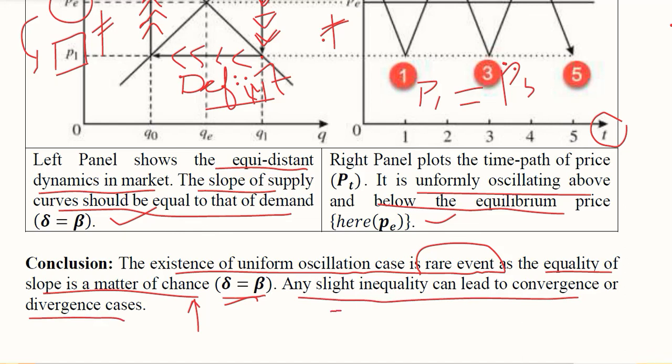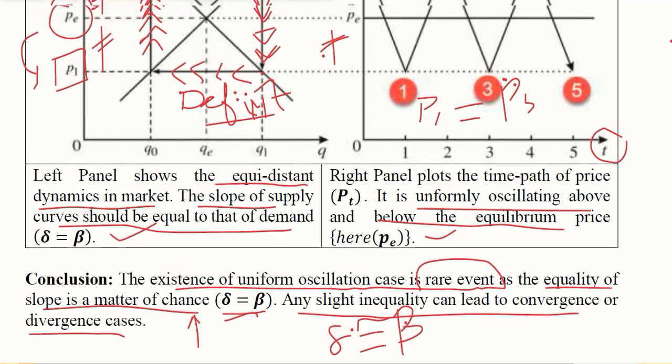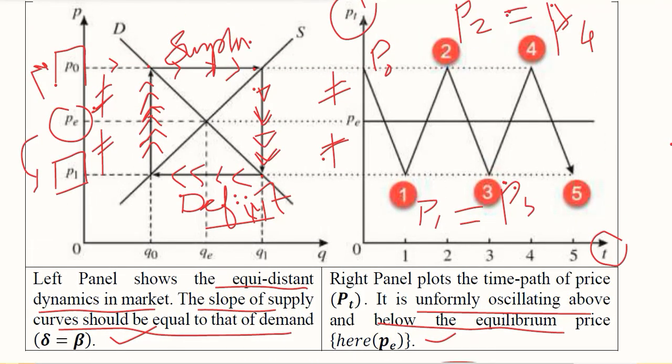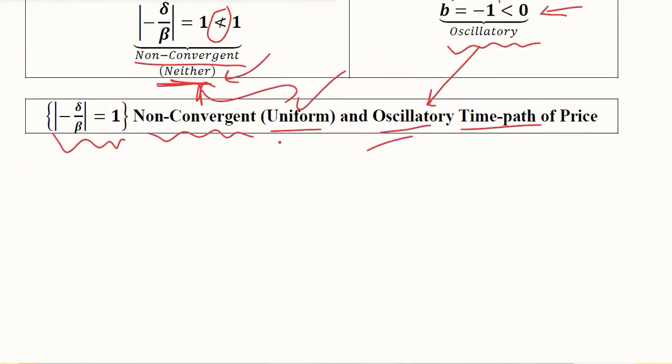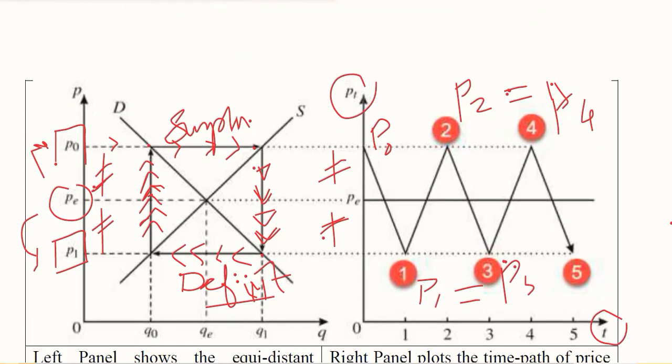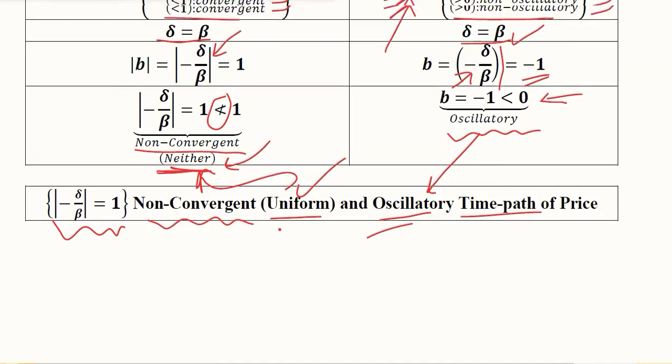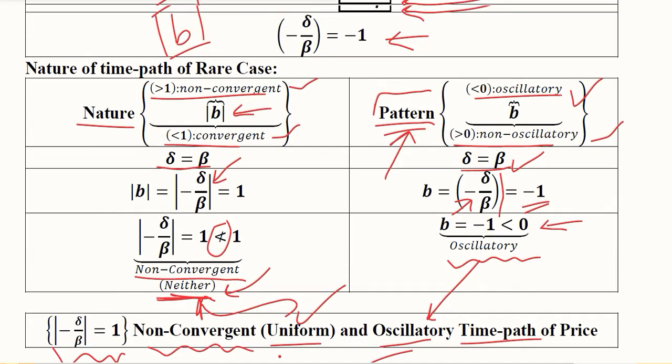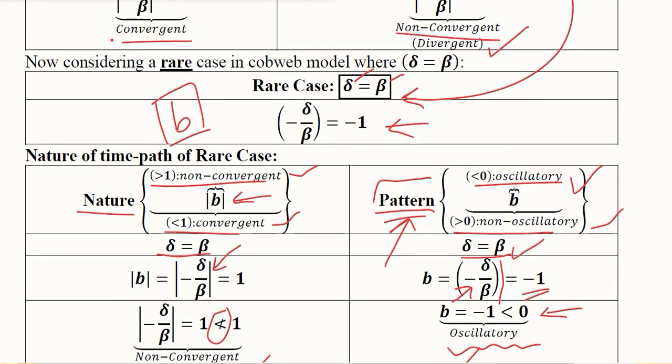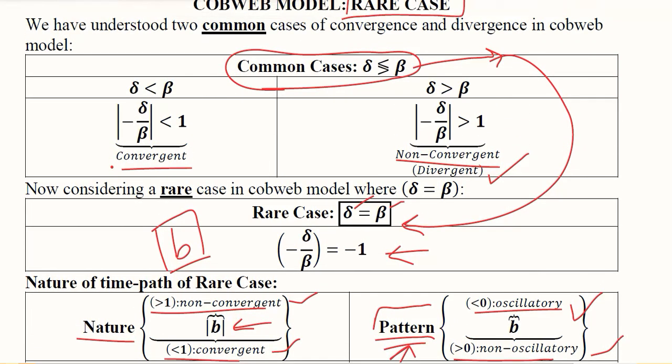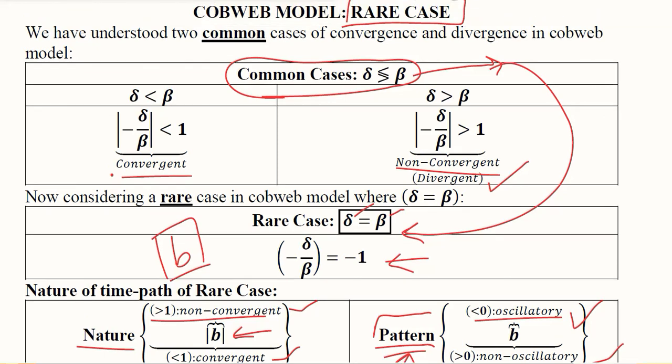If they are slightly different from each other then it might lead to convergence or divergence, because we have seen in the previous diagrams that it is natural that the deviation will happen in such a way that there will be either convergence or divergence. This is a rare case in Cobweb model, and we have now three cases as the three possibilities of the Cobweb model. Now we are in a position to do a numerical of Cobweb model which will be done in the next video.